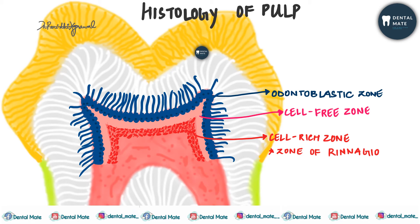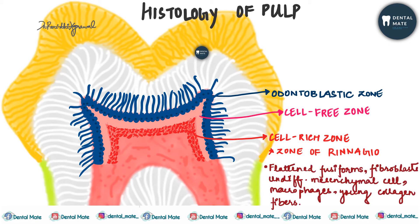The cell-rich zone is located under the cell-free zone. It contains flattened, stellate, or fusiform cells — mainly fibroblasts and undifferentiated mesenchymal cells — along with macrophages, immunocompetent cells, and young collagen fibers. Fibroblasts produce mainly type 1 collagen, and the undifferentiated cells serve as a reservoir for replacing destroyed odontoblasts, as they can convert into odontoblasts, fibroblasts, or macrophages.